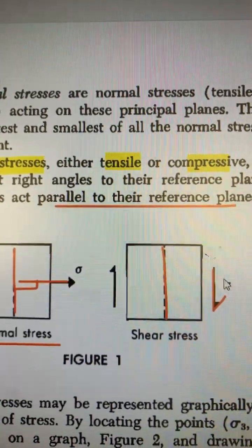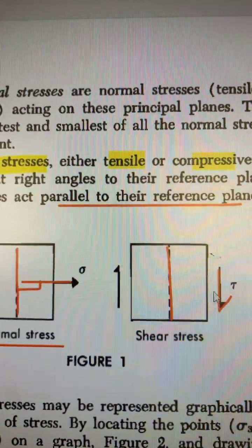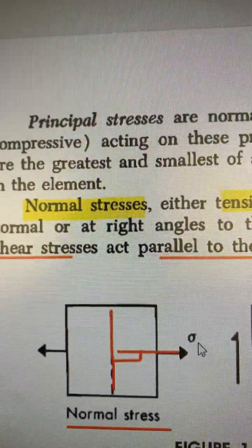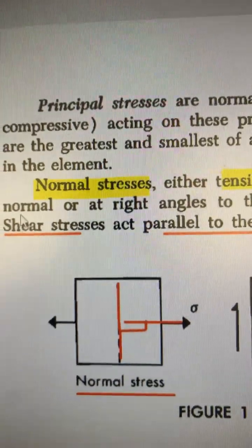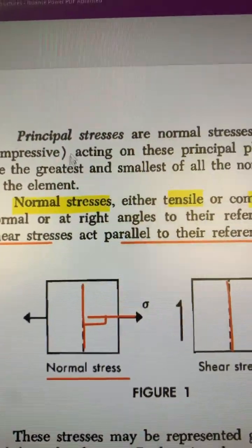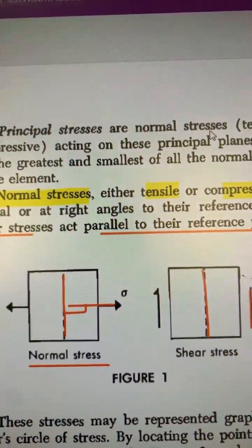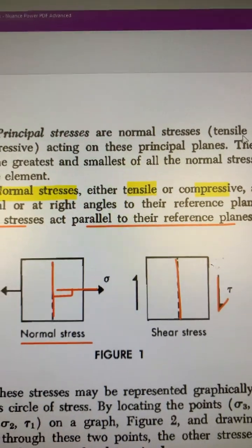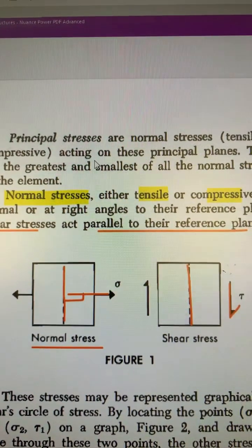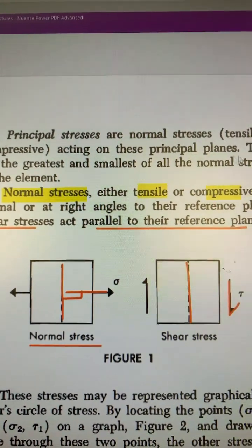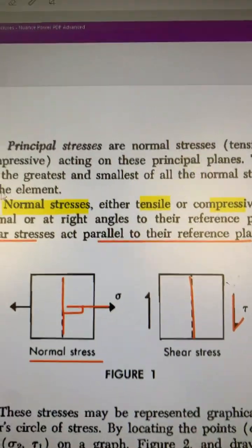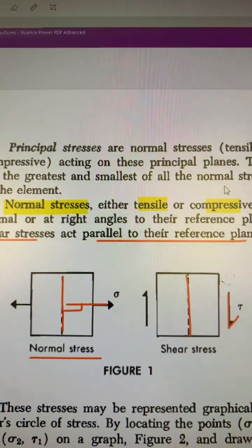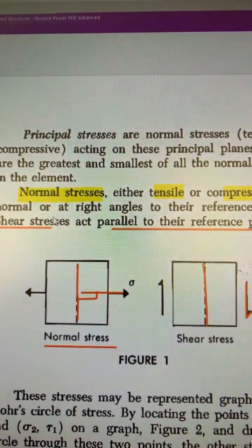You could see the shear stress. Shear stress is denoted by tau, and normal stress is denoted by sigma. Principal stresses are normal stresses — either tensile or compressive — acting on the principal planes. These are the greatest and smallest of all the normal stresses in the element.